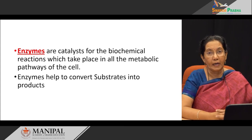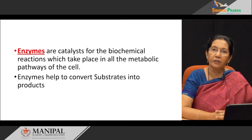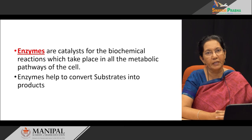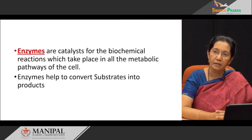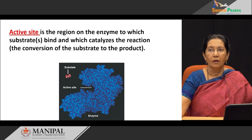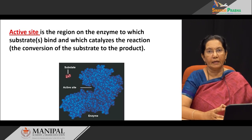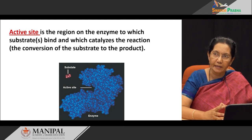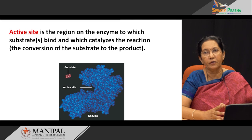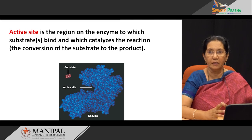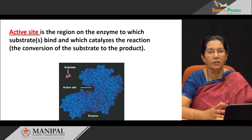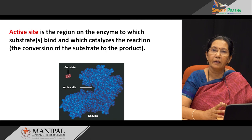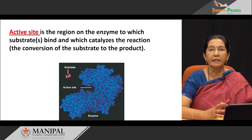Enzymes are catalysts for the biochemical reactions which take place in all the metabolic pathways of the cell. In short, enzymes help to convert substrates into products. So, where does the active site of an enzyme lie? The active site is that region of the enzyme to which the substrate binds and where the catalysis of that reaction occurs. That means the active site is that important place in the enzyme where a substrate or several substrates get converted into a single product or multiple products.